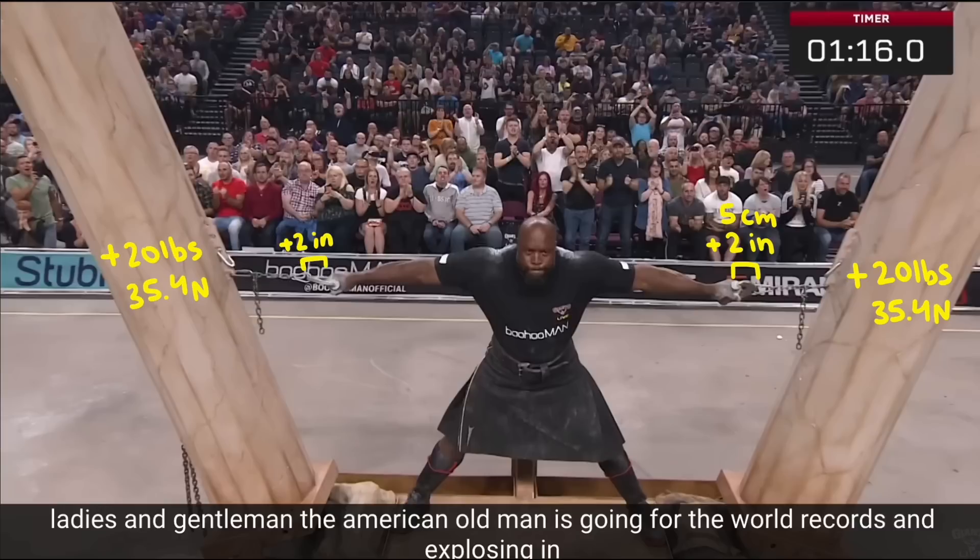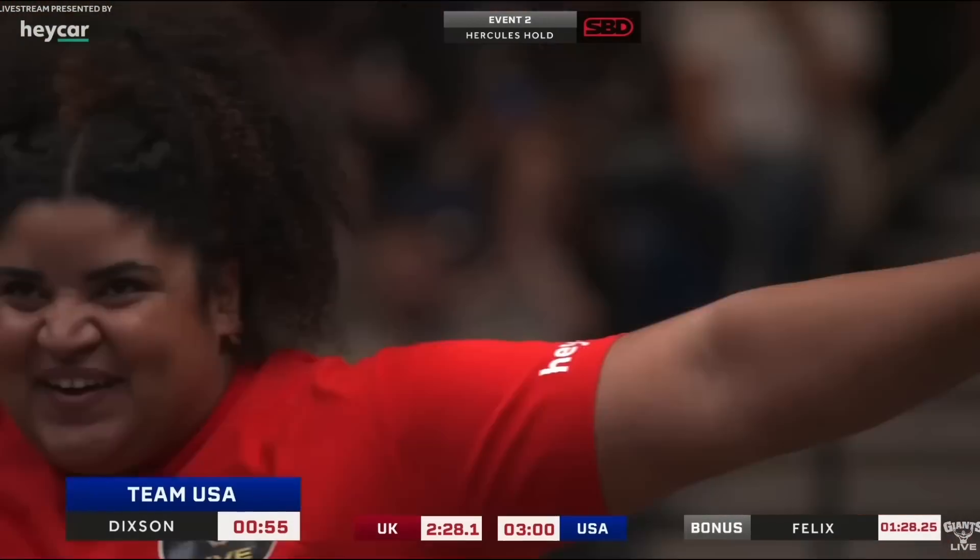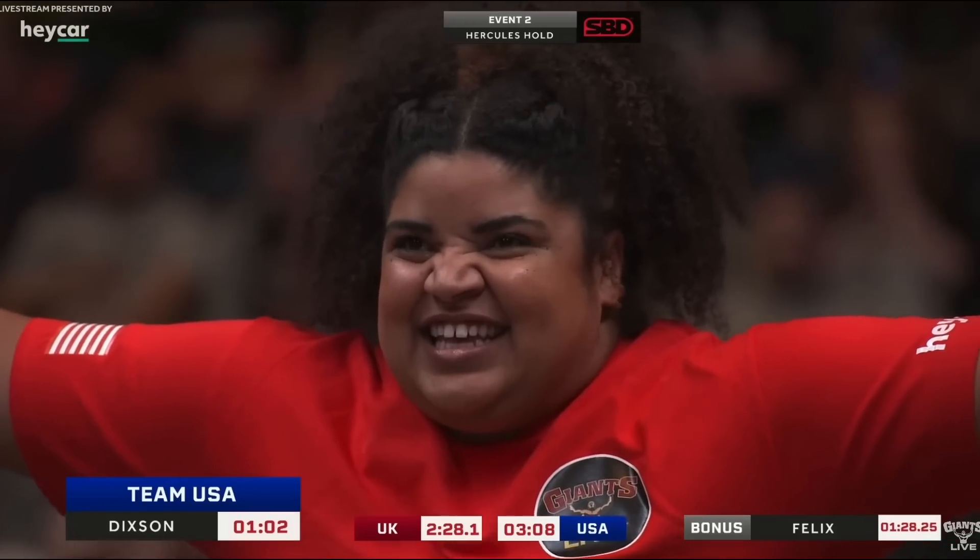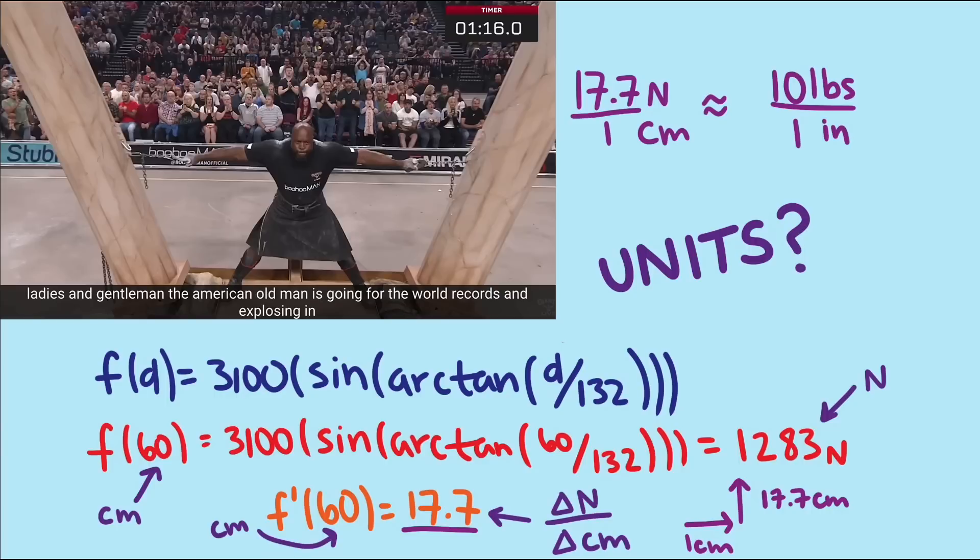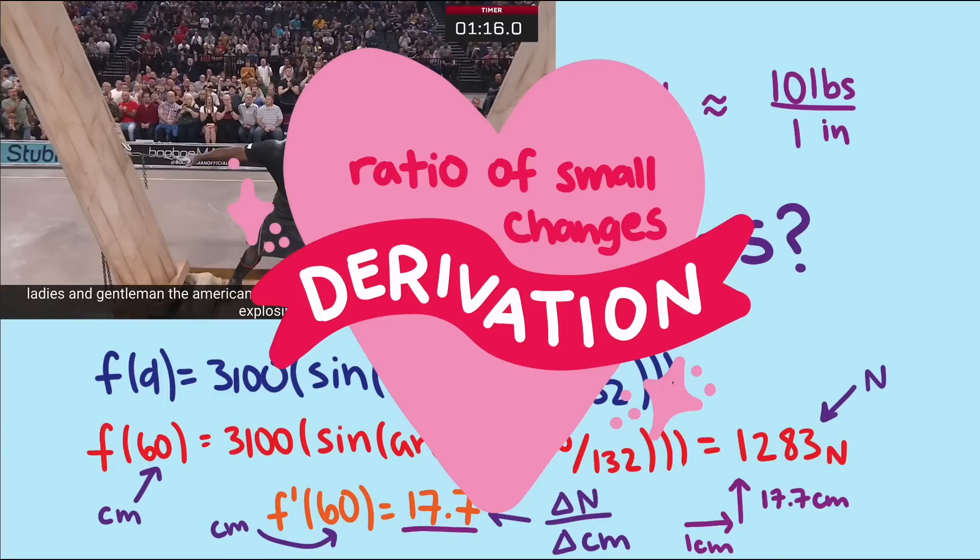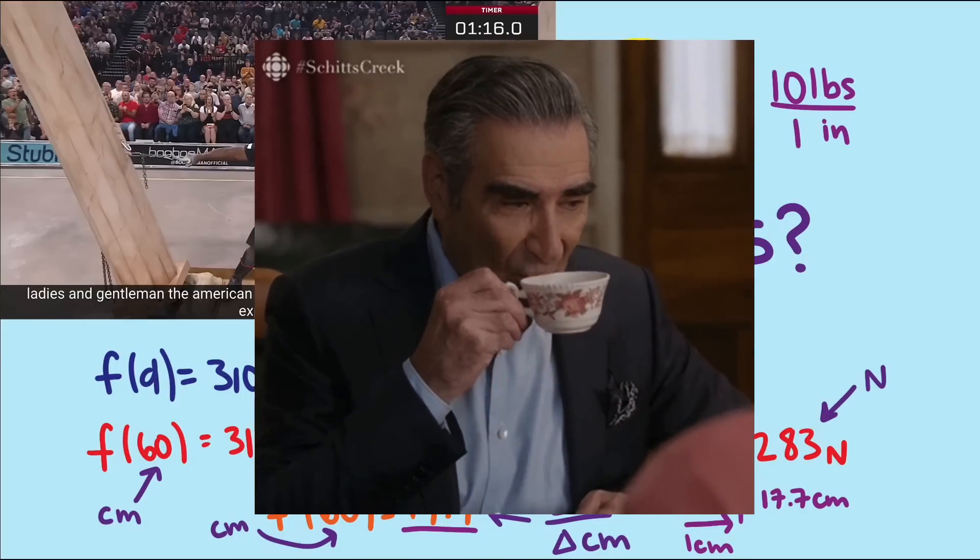Those are not trivial numbers. A competitor can use this finding to help them by trying to keep the pillars pulled in, either by bending their arms or bending their knees or both to reduce the effective weight they feel. Notice that in this pillar of Hercules example, the interpretation of the derivative as a ratio of small changes was very helpful in making sense of the meaning of our derivative value, 17.7.